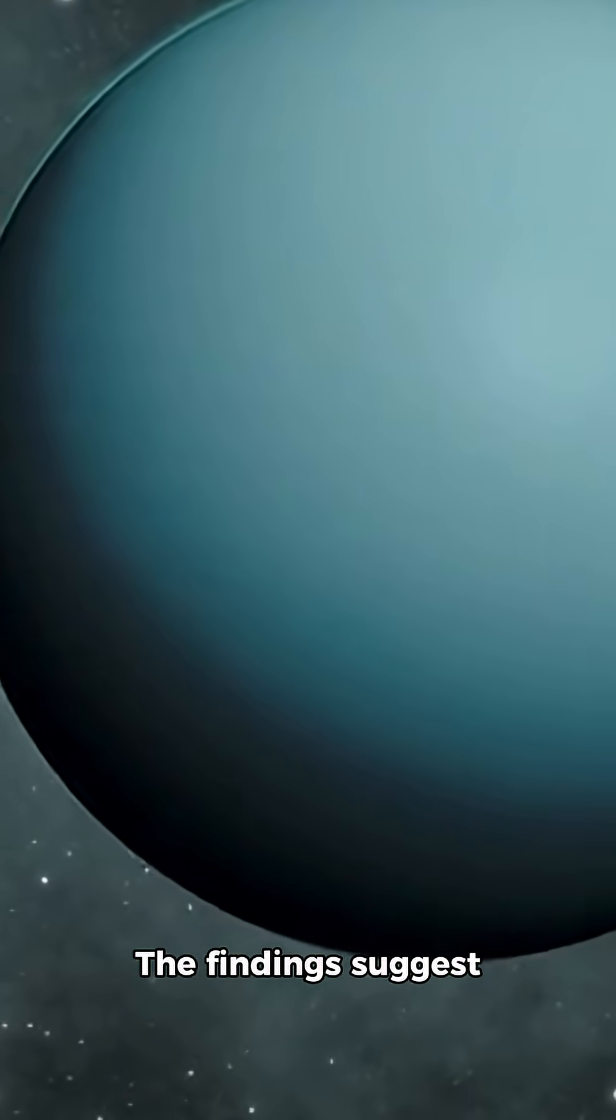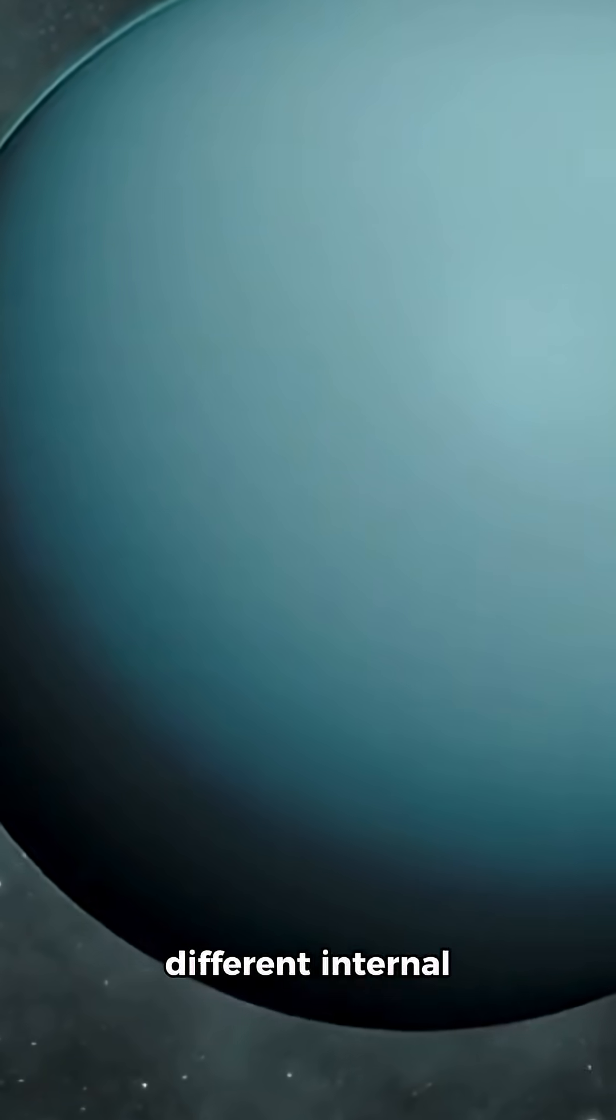The findings suggest Uranus may have a different internal structure than previously thought. Voyager 2's data might have been skewed by solar activity during its flyby.